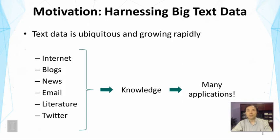In scientific research, for example, scientists are interested in knowing the trends of research topics and what related fields have discovered. This problem is especially important in biology research, where different communities tend to use different terminologies yet are studying very similar problems. Integrating the knowledge discovered in different communities to help study a particular problem is very important and can speed up scientific discovery. There are many such examples where we can leverage text data to discover useful knowledge to optimize our decisions.